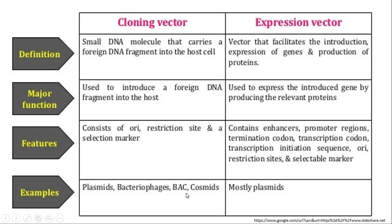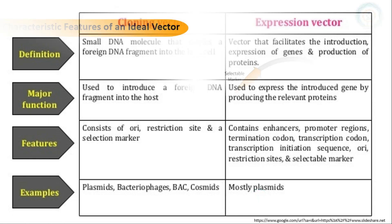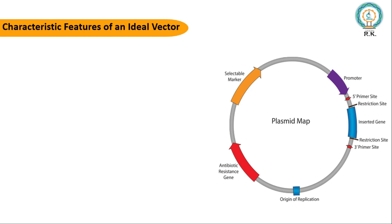Examples of cloning vectors include plasmids, bacteriophage, BAC (bacterial artificial chromosome) vectors, and cosmids. Examples of expression vectors are mostly plasmids.